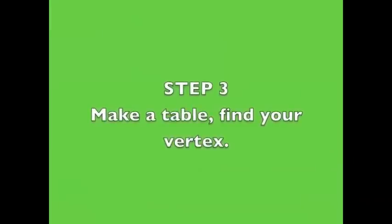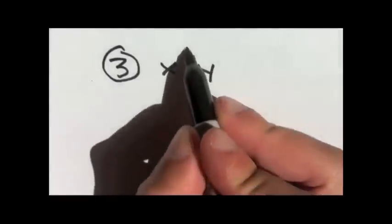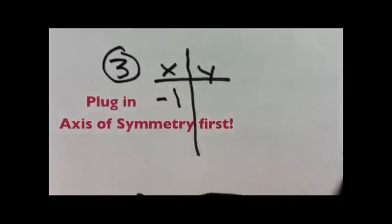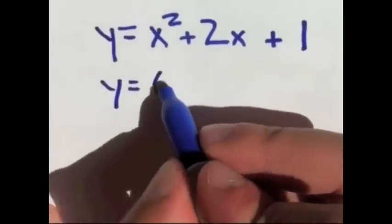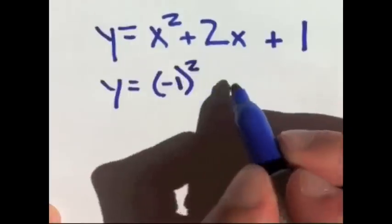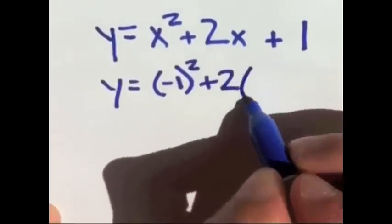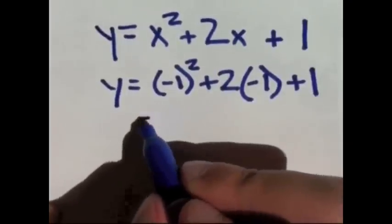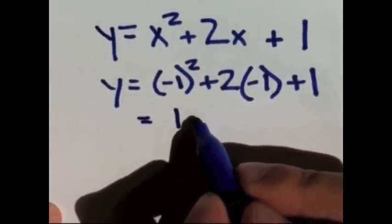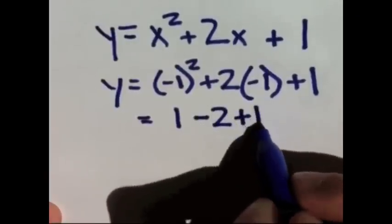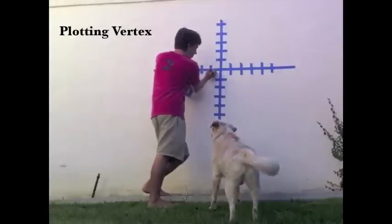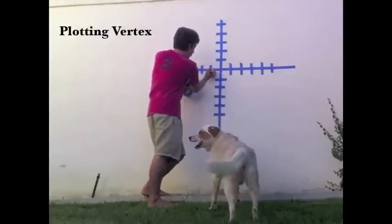Step three, we're going to make a table and find our vertex, our starting point. Here's our table — x in one column, y in the other. Our first x that we're going to plug in is our axis of symmetry, which is negative 1, and we're going to plug that back into the original equation. So wherever we see x we write negative 1: negative 1 squared plus 2 times negative 1 plus 1. Negative 1 times negative 1 is 1, minus 2 plus 1, which is 0. That's our vertex. So we're going to plot that point: negative 1, 0, right there. Done.